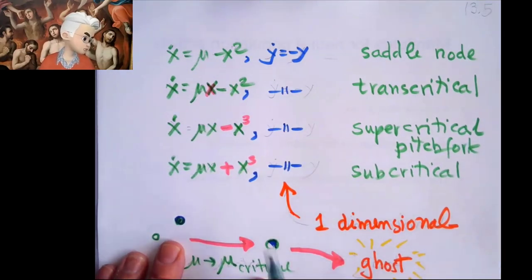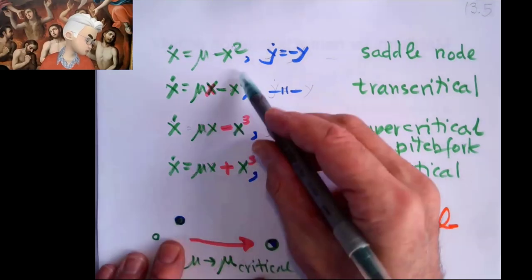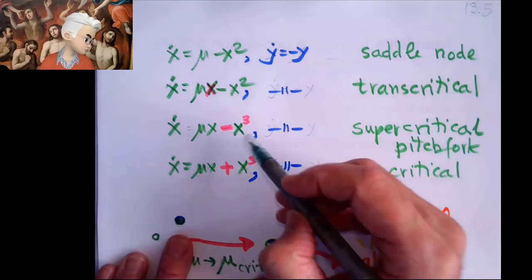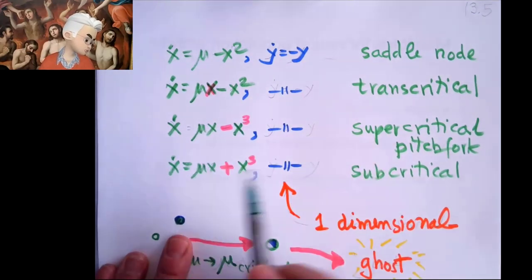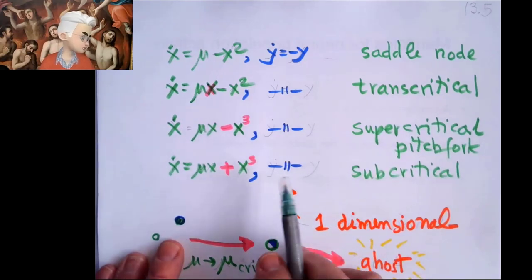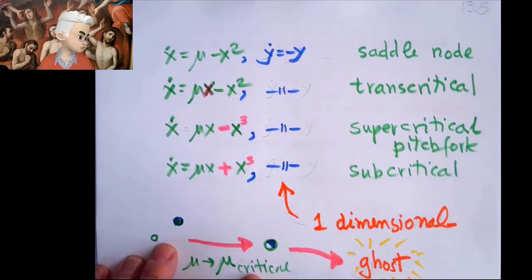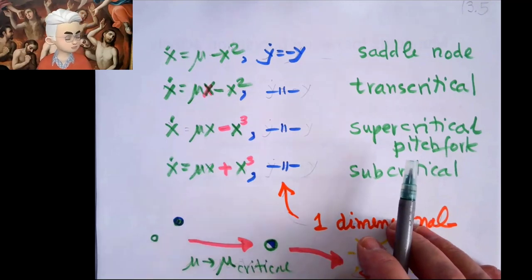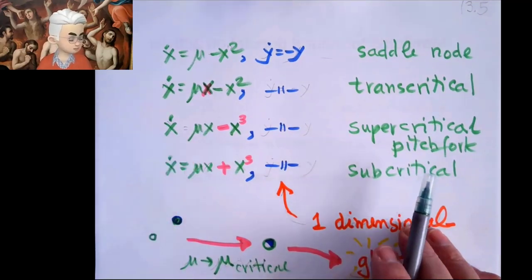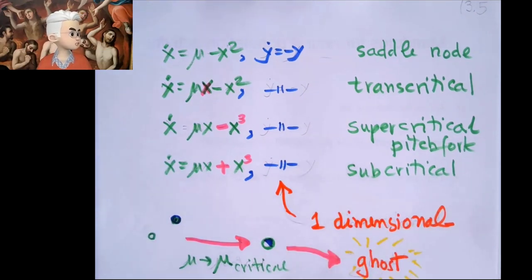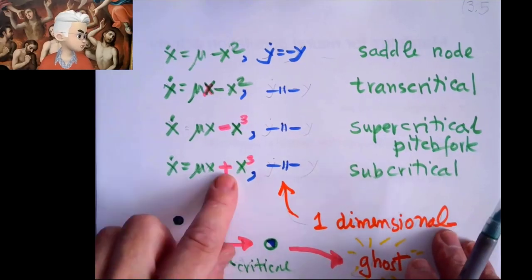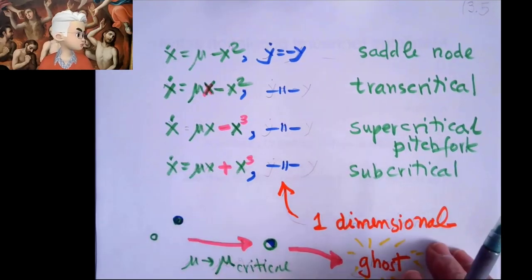And then depending on how the signs work out left and right, I will have either supercritical or supercritical, which means as I increase my parameters, I get my stable point will turn unstable and there'll be a pair of stable guys. That's a typical pitchfork. But if the sign is wrong, as I increase my parameter, I see nothing.